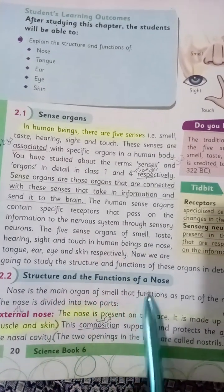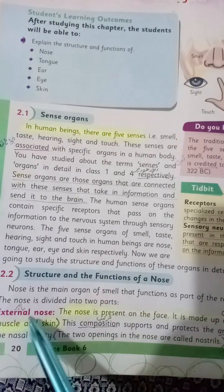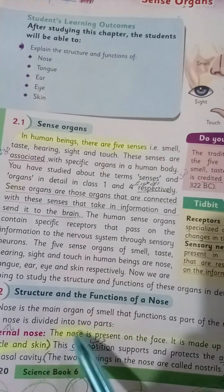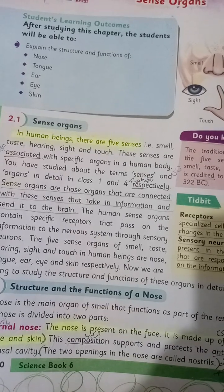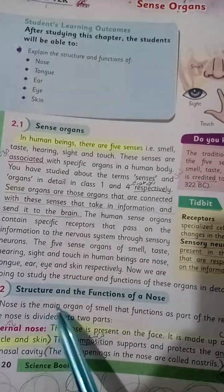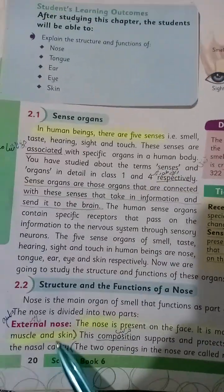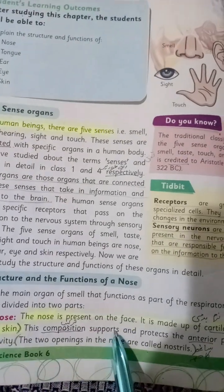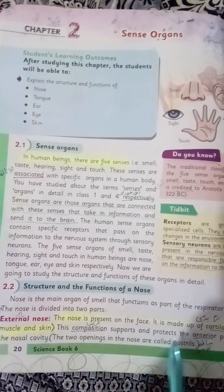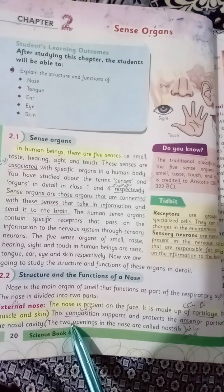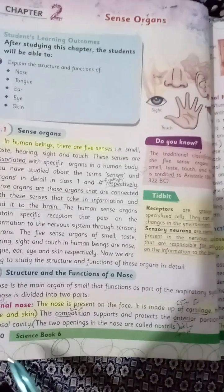Now we come to the structure and function of the nose. Nose is the main organ of smell and functions as part of the respiratory system. The nose is divided into two parts. The first part is the external nose — the outside area present on the face. It is made up of cartilage, bone, muscle, and skin. This composition supports and protects the anterior portion of the nasal cavity.